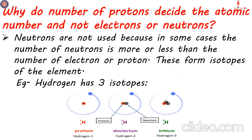Before we finish, let us discuss one more thing: why do the number of protons decide the atomic number of the element, and not the number of electrons or neutrons? The number of neutrons is not always the same as the number of protons. In some cases they differ, and these changes cause the formation of isotopes. An isotope of an element has the same number of protons but a different number of neutrons. For example, looking at isotopes of hydrogen: in one case hydrogen has no neutron; in the next it has one proton and one neutron; and in a third case, one proton and two neutrons. In all three cases the number of neutrons is different, but it is still hydrogen.